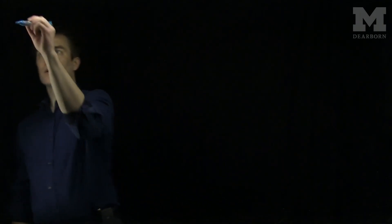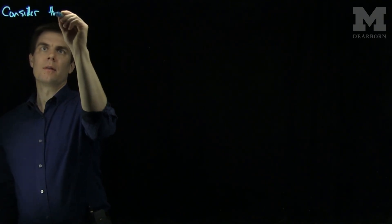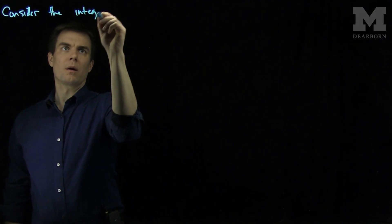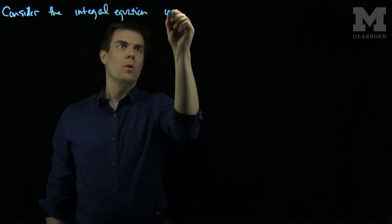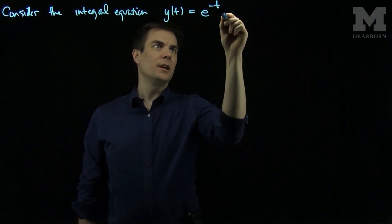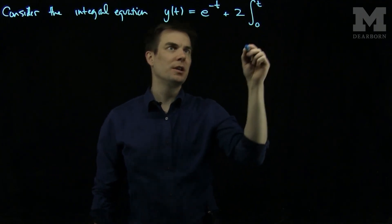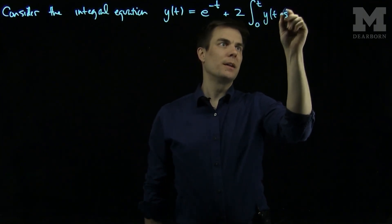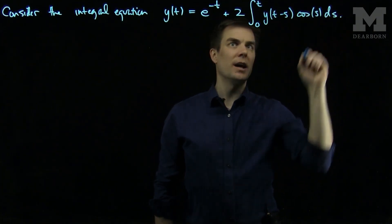Hello students. In this video we'll see how to use the Laplace transform to solve an integral equation. Let's consider the integral equation: y of t is e to the negative t, plus 2 times the integral from 0 to t of y of t minus s, times the cosine of s, ds.